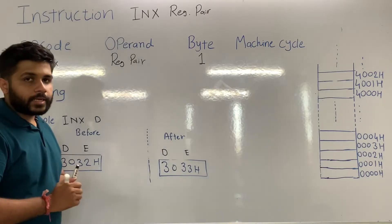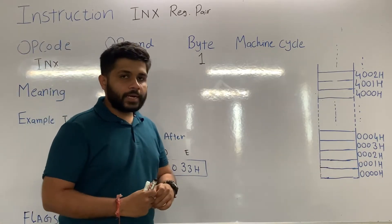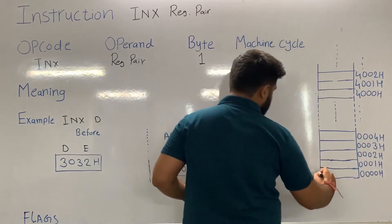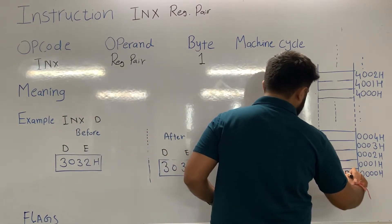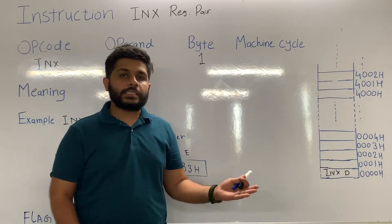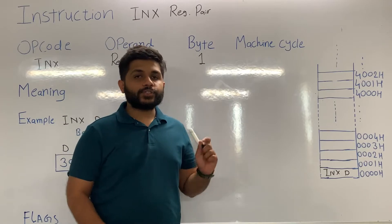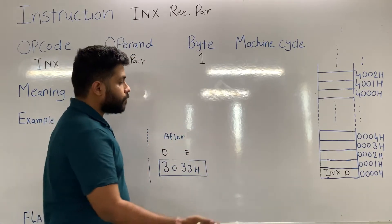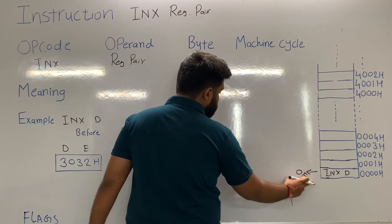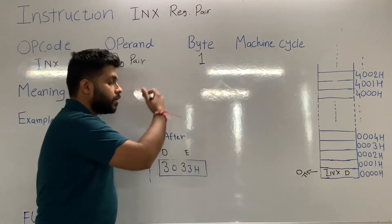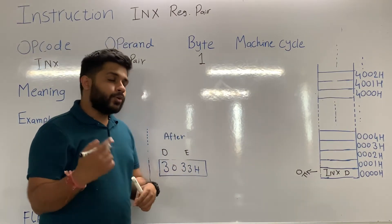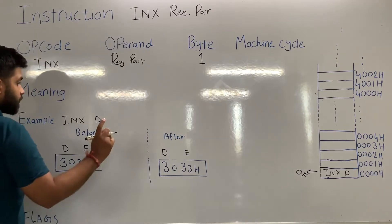Now let's see the machine cycle. Since this instruction is of one byte, it will occupy one memory location. When INX D is stored in memory, the processor will fetch, decode, and execute it. To fetch, it will perform the first machine cycle — the opcode fetch — and the whole instruction will be transferred to the processor.